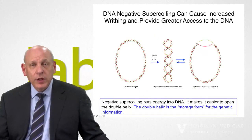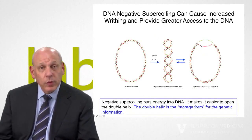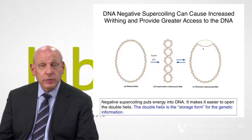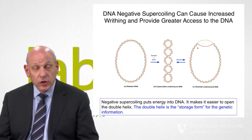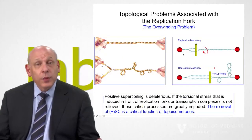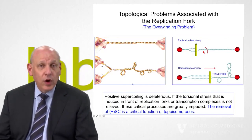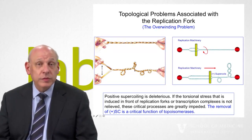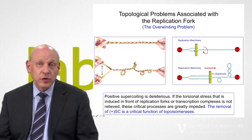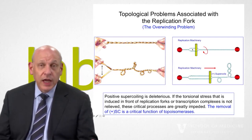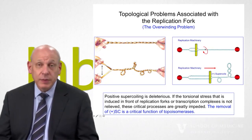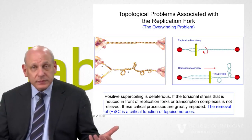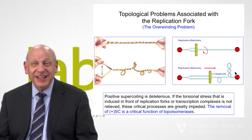Why is this important? Underwound DNA allows the double helix to be opened more easily. The double helix is actually just the storage form for genetic information — to get to that information, we have to pull the two strands apart. If the DNA is underwound, it puts energy in and helps you access the information. The problem is at a replication fork or anything that pulls the double helix apart: you're compressing the turns into a smaller and smaller space, the DNA gets overwound ahead of the machinery, and just like an overwound rope, machinery can't go any further and things will stop.